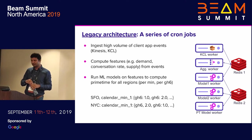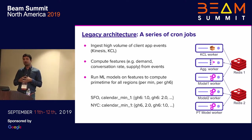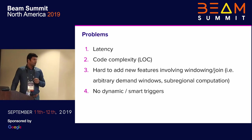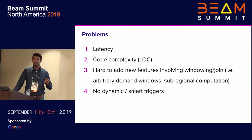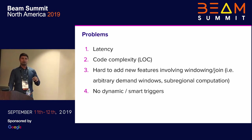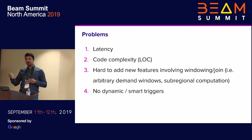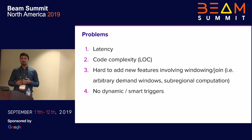To give you the scale: we calculate hundreds of features for each geohash, and in one minute we process almost 3 million geohashes — so in a day we compute almost 400 billion features. The legacy infrastructure worked well early on when models were simple, but over time models got more complicated with more intermediate models and a DAG structure. The latency in the longest path of the DAG could be several minutes, which was not acceptable.